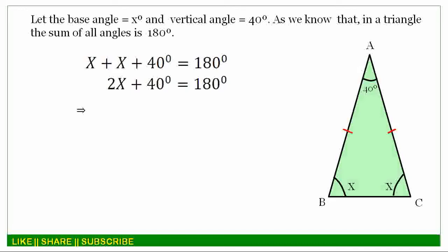So we are going to subtract both sides by 40 degrees, so that we get 2x by all alone. After subtracting, we get 2x is equal to 180 degrees minus 40 degrees, which will equal to 140 degrees.